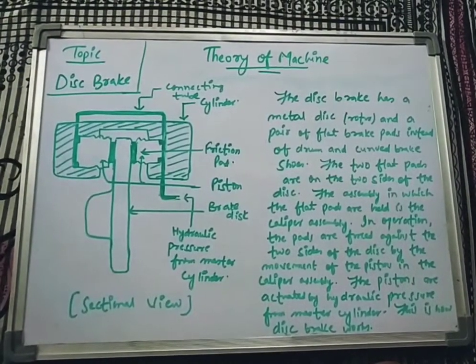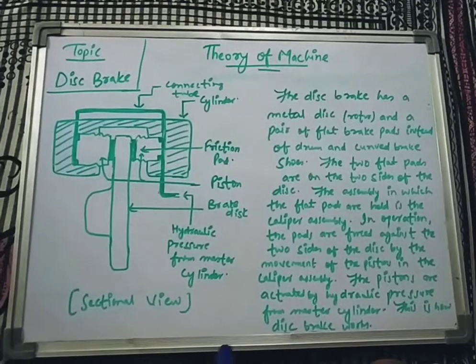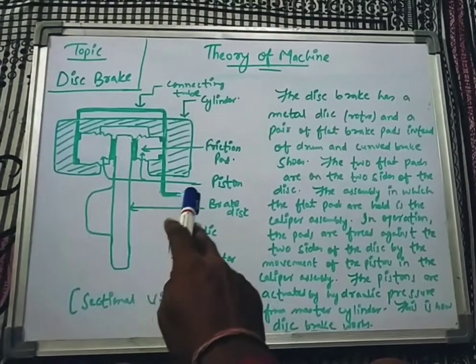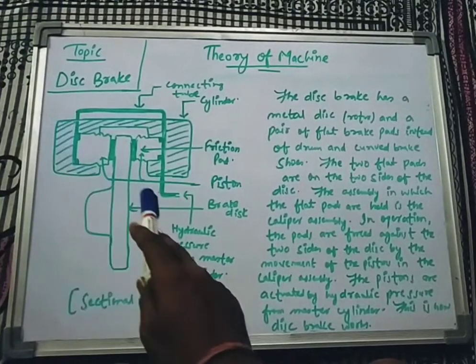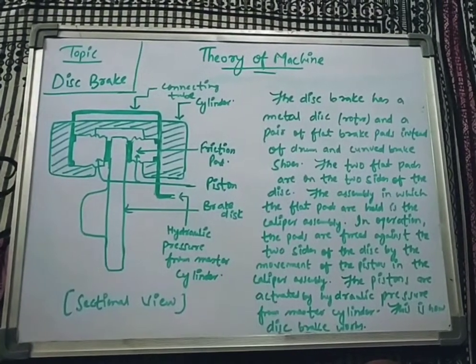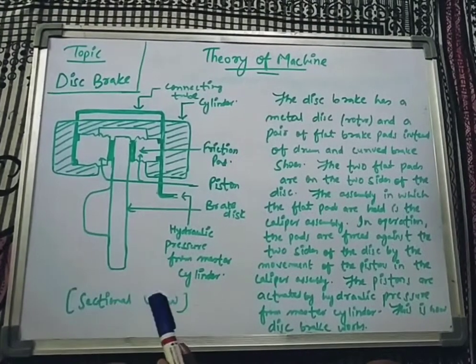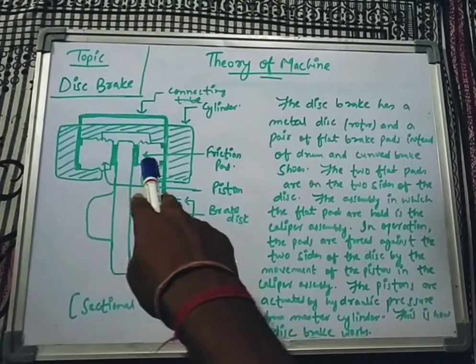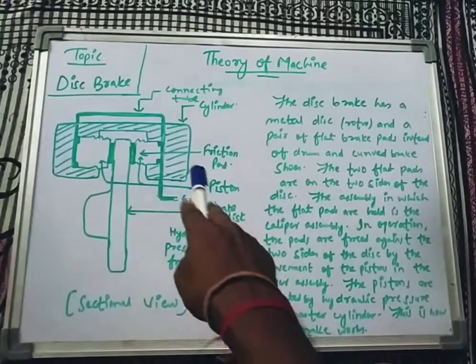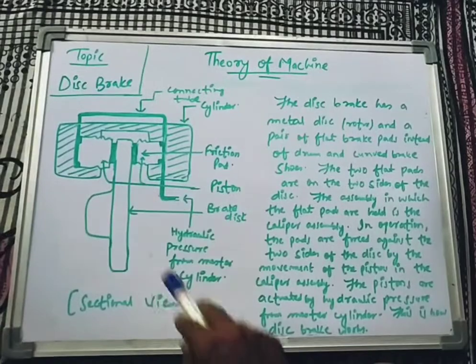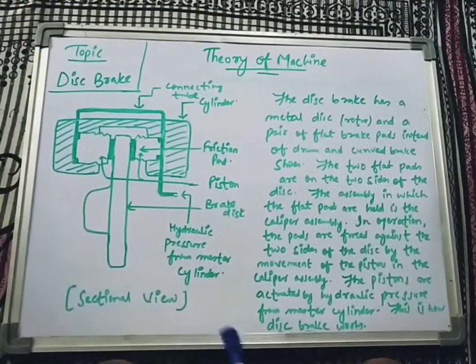I have drawn a diagram of a sectional view of a disc brake showing the arrangements. This is the pipe or connecting tube through which the hydraulic fluid from the master cylinder travels to the piston. These two portions are the two pistons. These are the two friction pads. This is the cylinder and this is the brake disc.